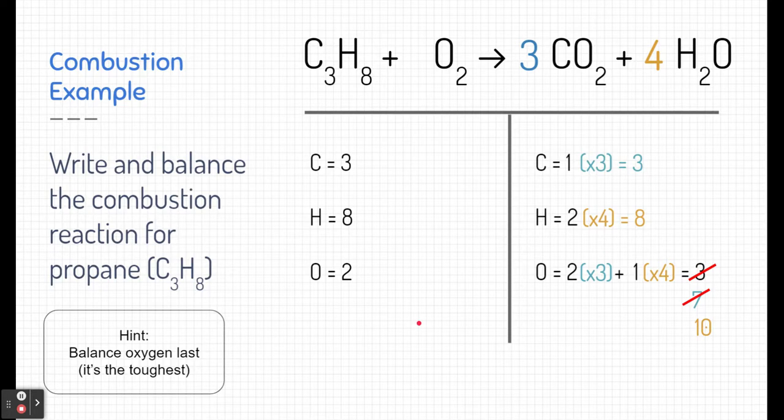Now we can go ahead and balance our oxygens in the reactant side. Well, two goes into ten five times, so I'm going to multiply my oxygen by five, allowing us to balance both sides.